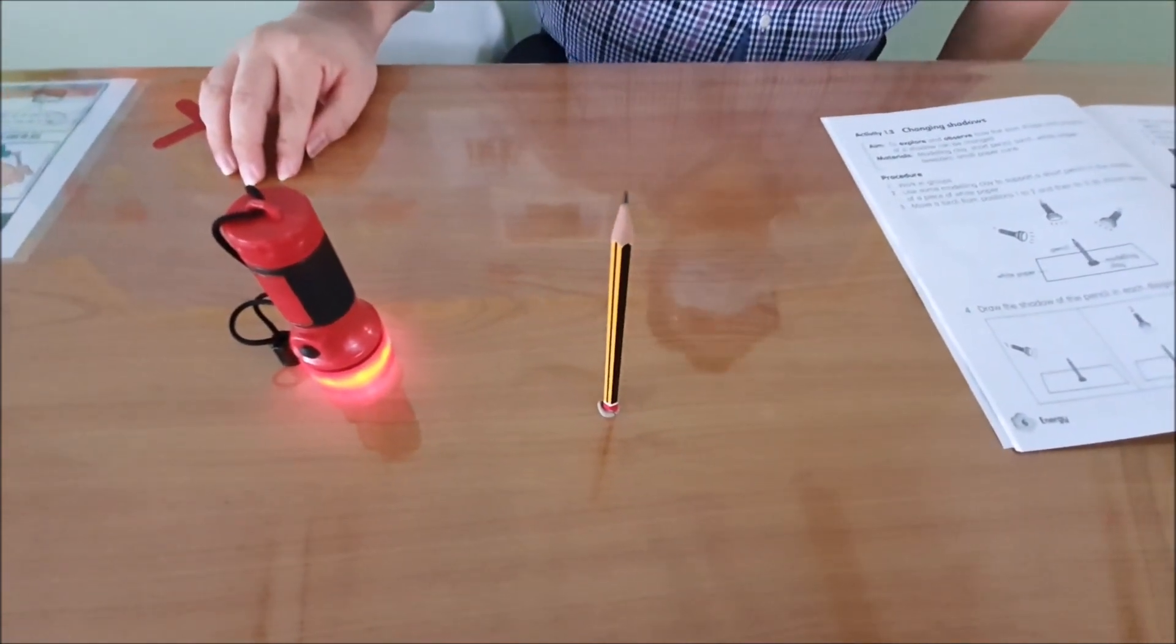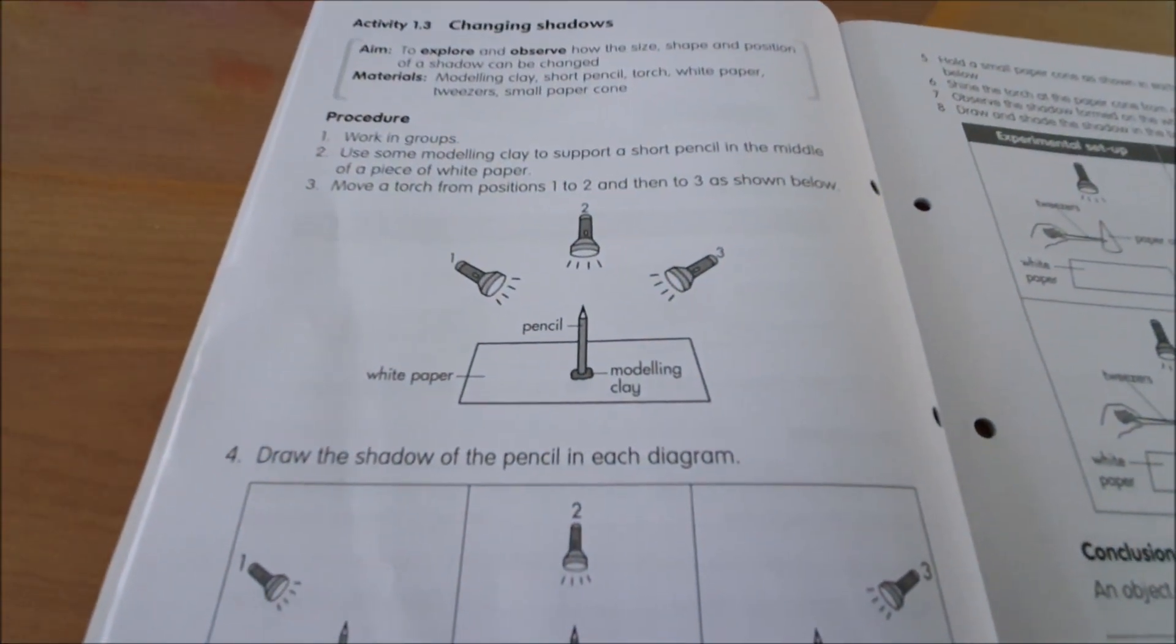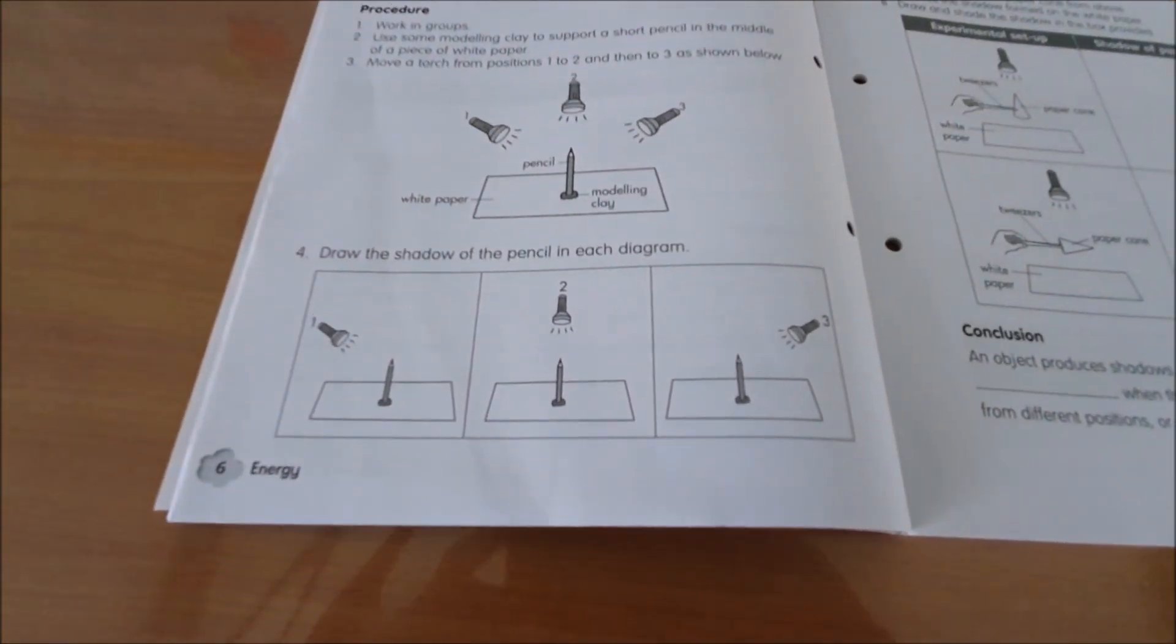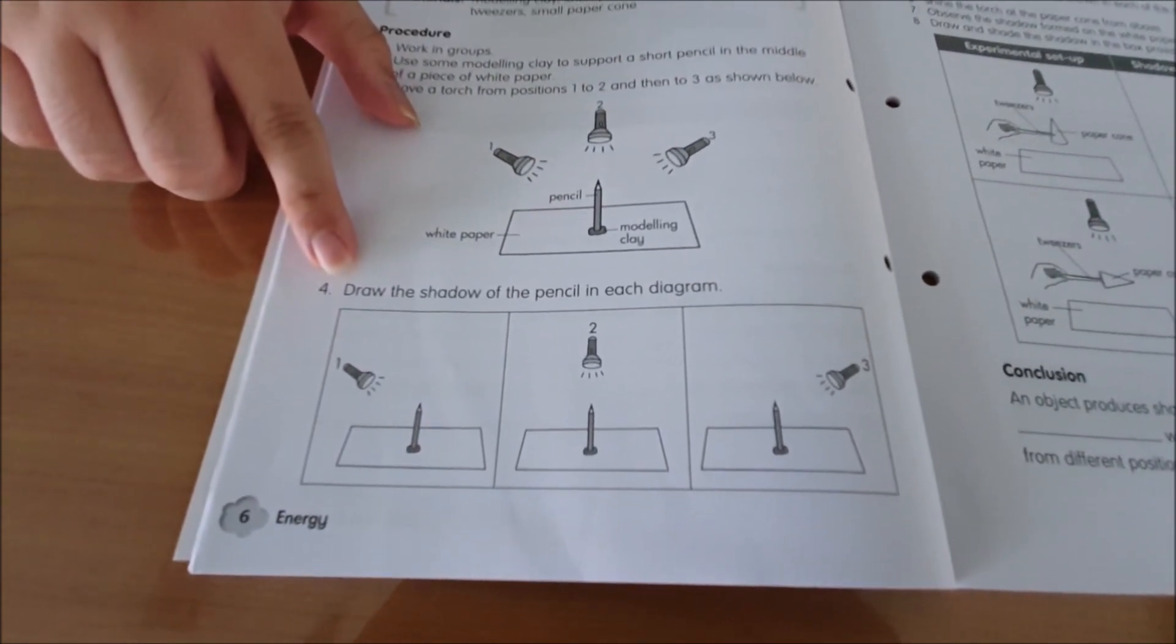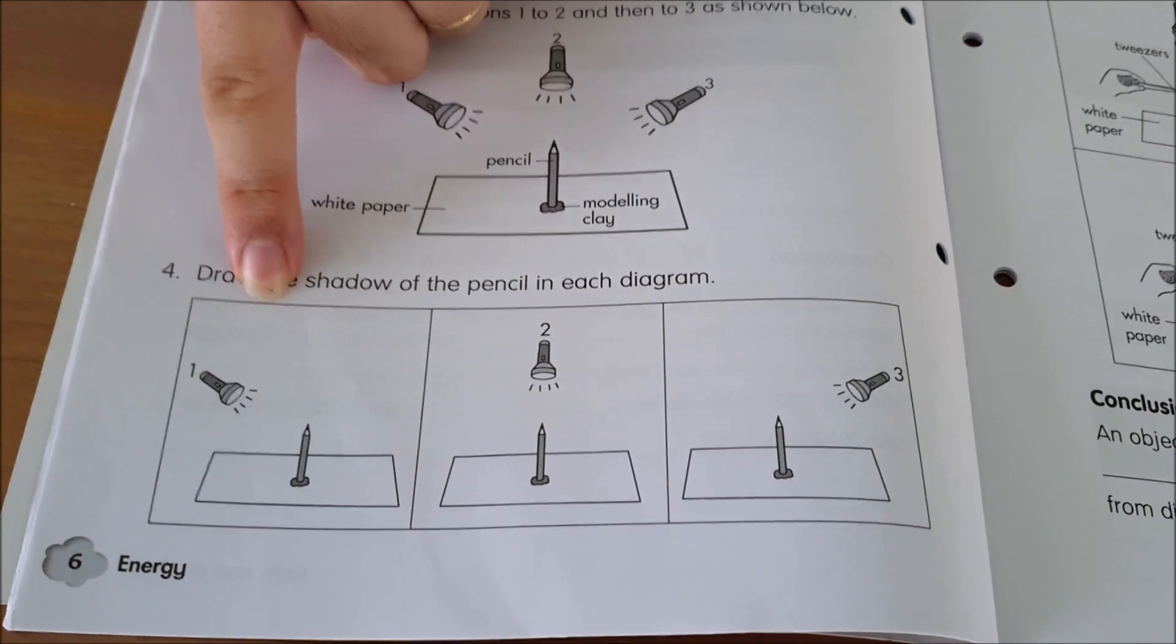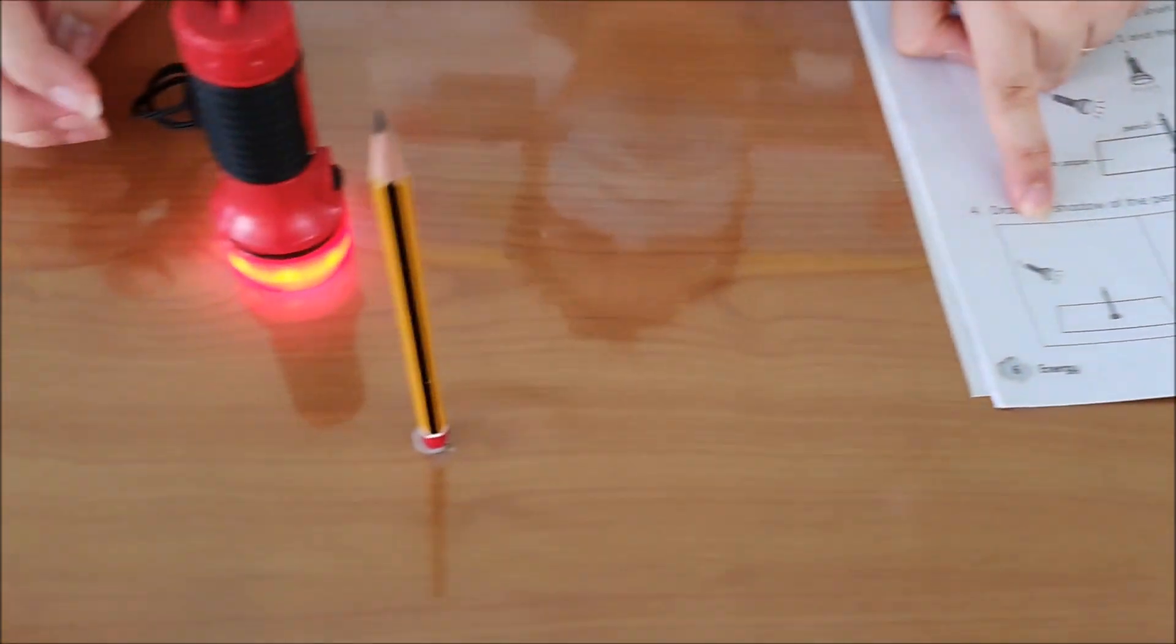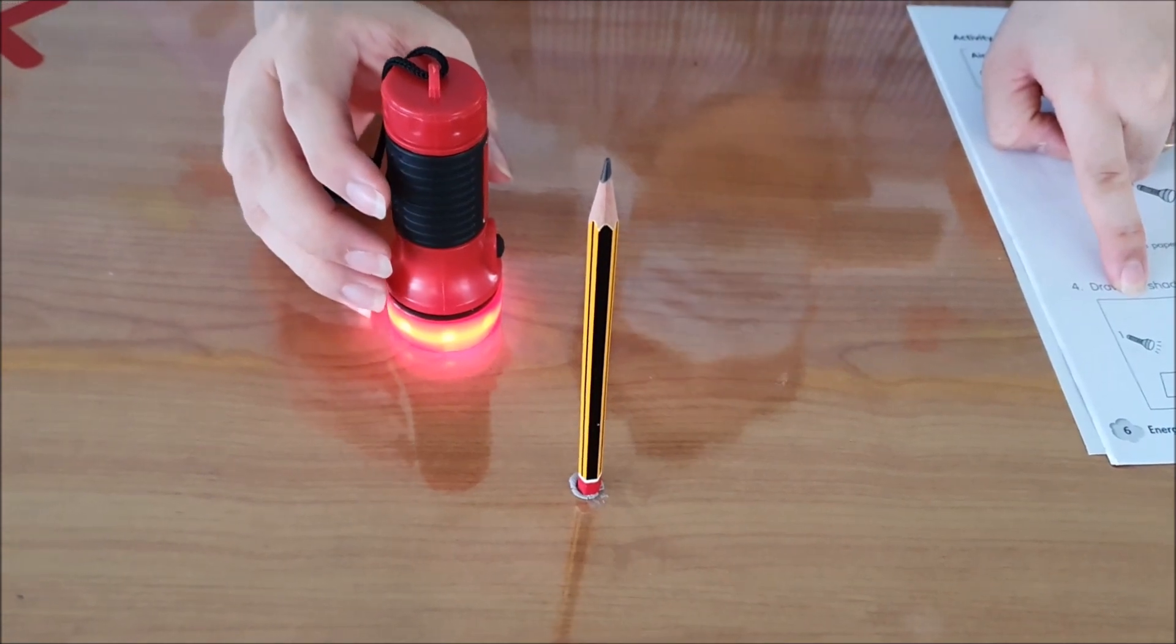We are going to cast shadows on the pencil and you are supposed to draw the shadow on question 4 on the three diagrams. I'm going to do the first part where I shine the torch on the left. Look what happens when I shine the torch on the left and observe the shadow.